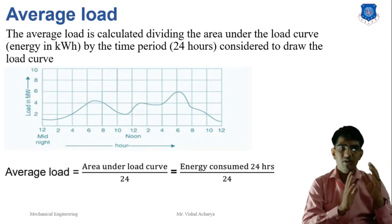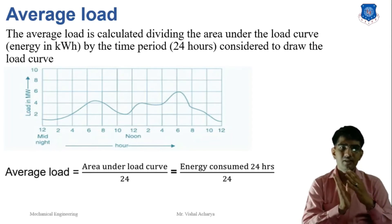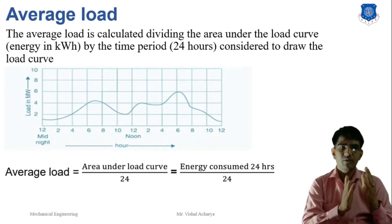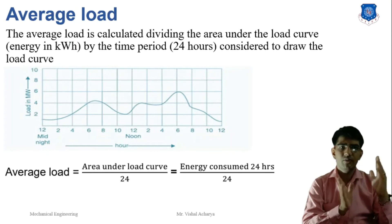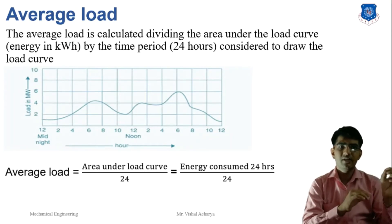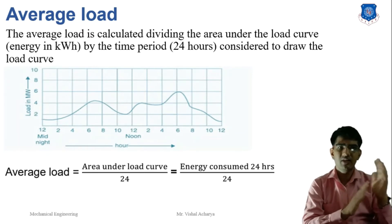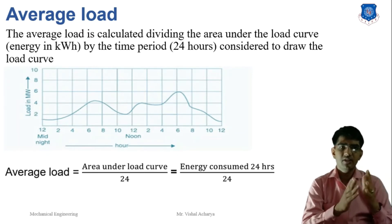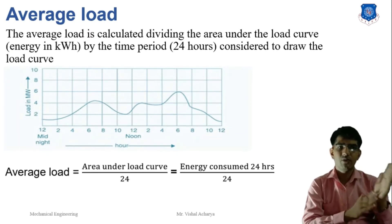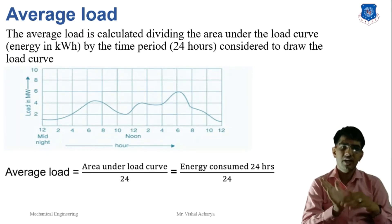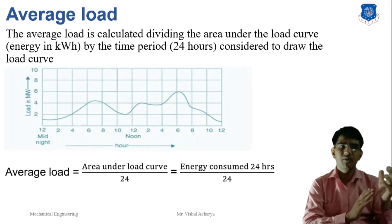If we calculate the average load for a month, the graph presents the load on a day-wise basis. The total area under the load curve for the month divided by 30 × 24 — that is, 720 hours — gives the average load for the month. The same approach applies for calculating the annual average load.